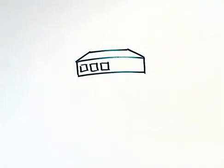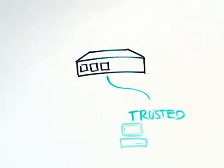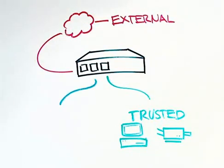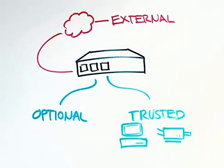One way of thinking about your network is to see it as three segments: trusted, external, and optional. The trusted segment is the primary network you want to protect. In contrast, the external network is everybody else, usually connecting to your network over the Internet. Finally, the Edge enables you to set up an optional, or DMZ, segment, which you also protect, but typically using policies different from the trusted and external segments.